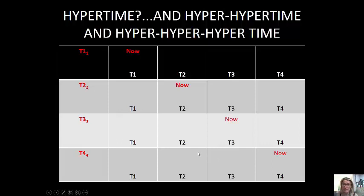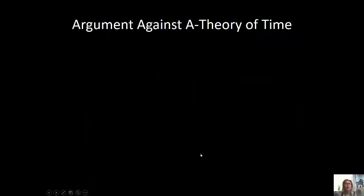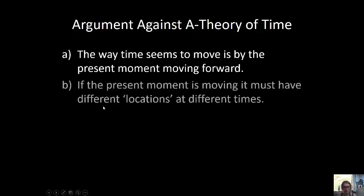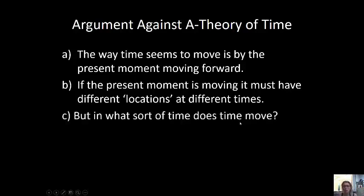So if that explanation is confusing, don't worry about it, this is the problem stated simply. If time moves, how fast does it move? And how would you measure it? And against what? It's really just arbitrary. The way time seems to move is by the present moving, by the present moment moving forward. Premise one. Premise two, if the present moment is moving, it must have different locations at different times. But in what sort of time does time move? So this is the puzzle stated out. These three propositions don't fit together.